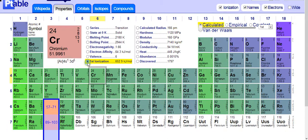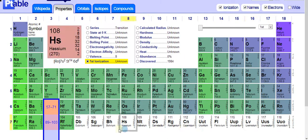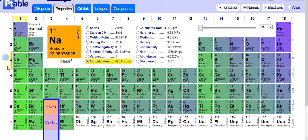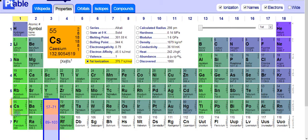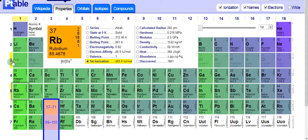And here's ionization energy. As you can see, as it goes this way, it decreases. As it goes this way, it decreases, and you can see the number, 375, 403. As it goes down, it decreases.